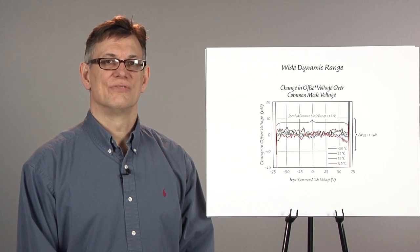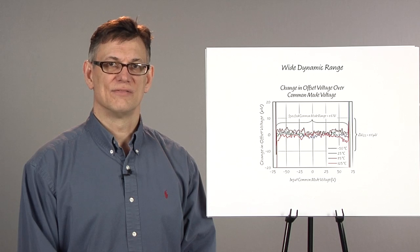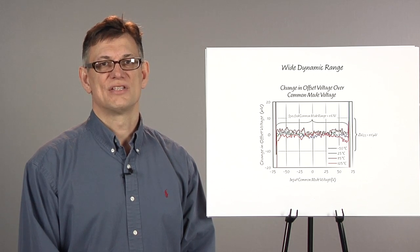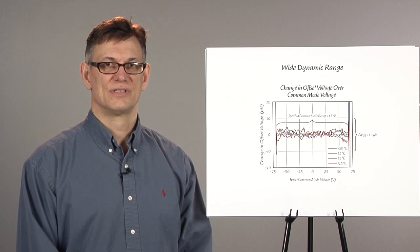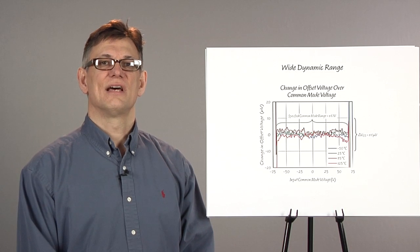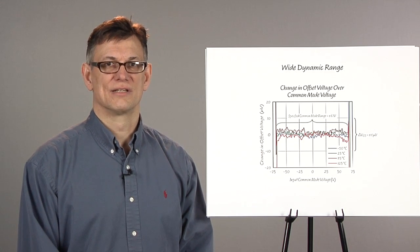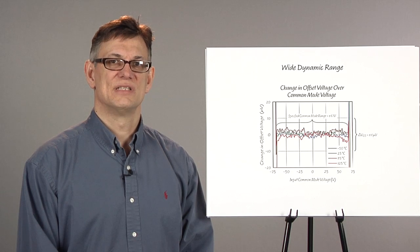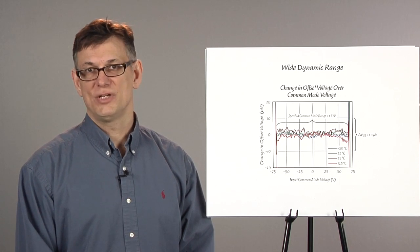Accurately measuring voltages often requires minimizing the impact of loading, especially when high source impedances are involved. The LTC6090 will provide the ultimate in electrometer-grade buffering with its CMOS inputs typically drawing less than 5 picoamps.